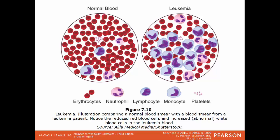An illustration compares normal blood versus blood with leukemia. In normal blood, most cells are red blood cells with a variety of white blood cells scattered throughout. In leukemia, there is a much higher proportion of immature, non-functioning white blood cells, greatly suppressing the production of normal, functional, healthy white blood cells.